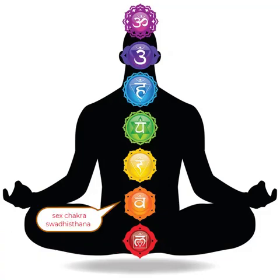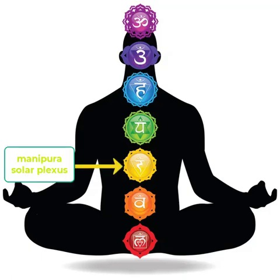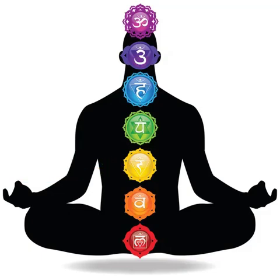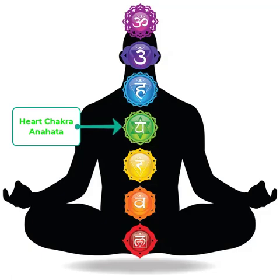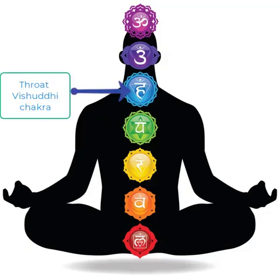The Swadhisthana chakra is below the navel area. Then above that, below the rib cage and above the navel area, is the Manipura chakra — the solar plexus. Above that is the heart chakra, the Anahata chakra. Then the throat chakra, the Vishuddhi chakra, over the throat area.